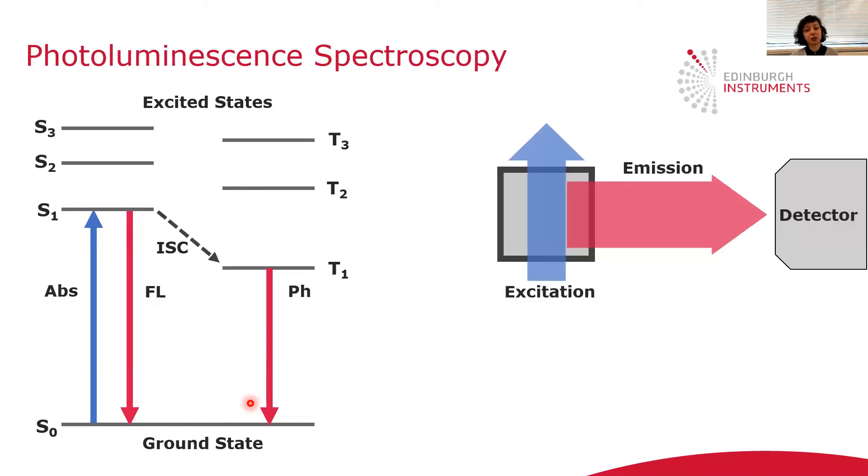As I mentioned, you will study the radiative relaxation processes by photoluminescence spectroscopy. You would use a photoluminescence spectrometer, where you have an excitation beam going through the sample. This is the sample. Then the emission is studied at the right angle to avoid interference from excitation. And the light is filtered out using a monochromator.